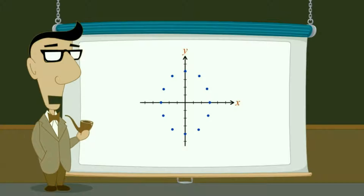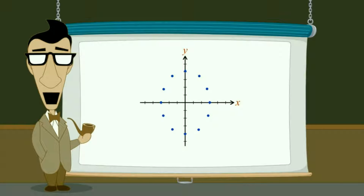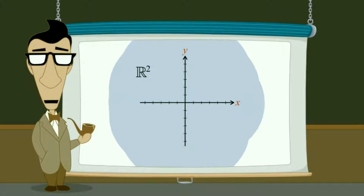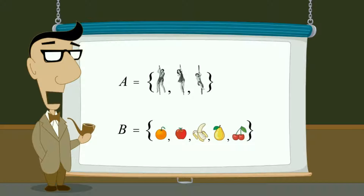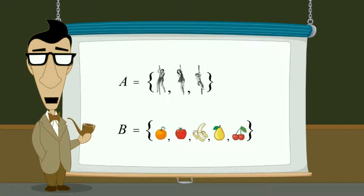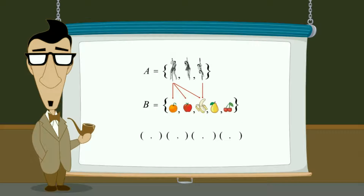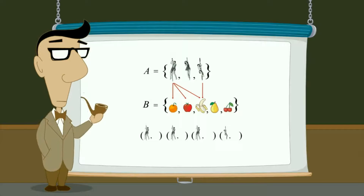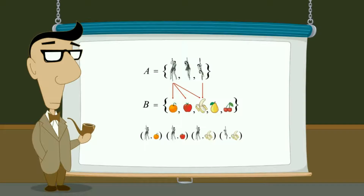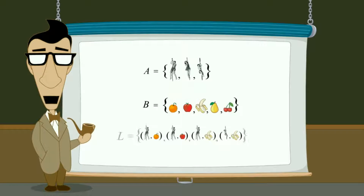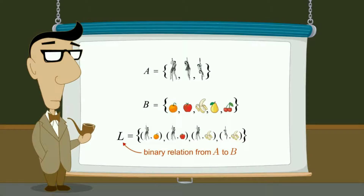As we saw, a binary relation between two sets is a subset of their Cartesian product. So this binary relation is a subset of the Cartesian product of the set of real numbers with itself, R², which consists of every point in the x-y plane. We showed that a binary relation is a way of associating or relating elements of one set to elements of another. The same information can be conveyed using ordered pairs where the first element is a member of the first set and the second element is a member of the second set. Let's name a set containing these ordered pairs set L, so L represents a binary relation from A to B.